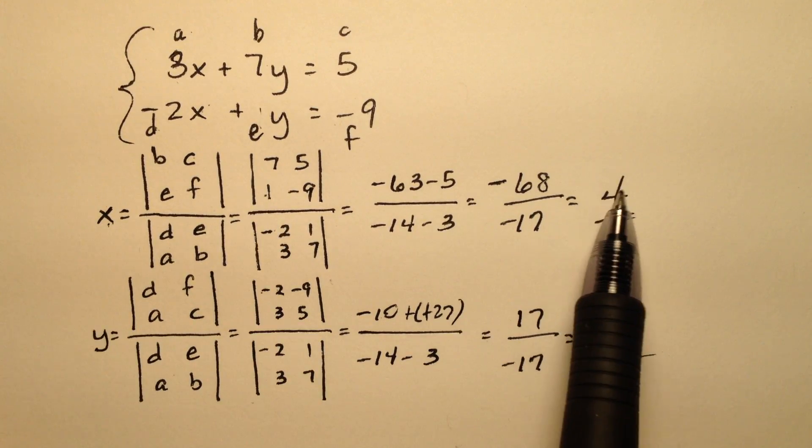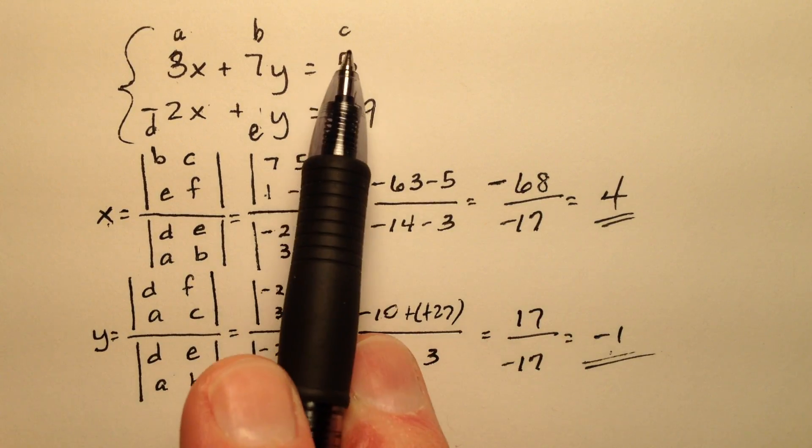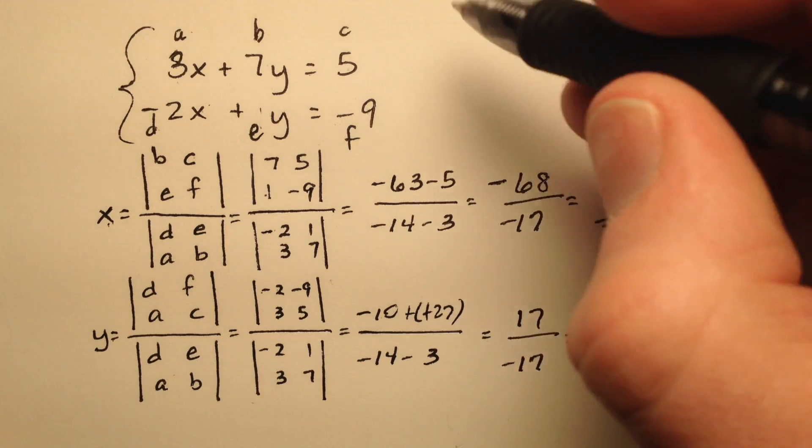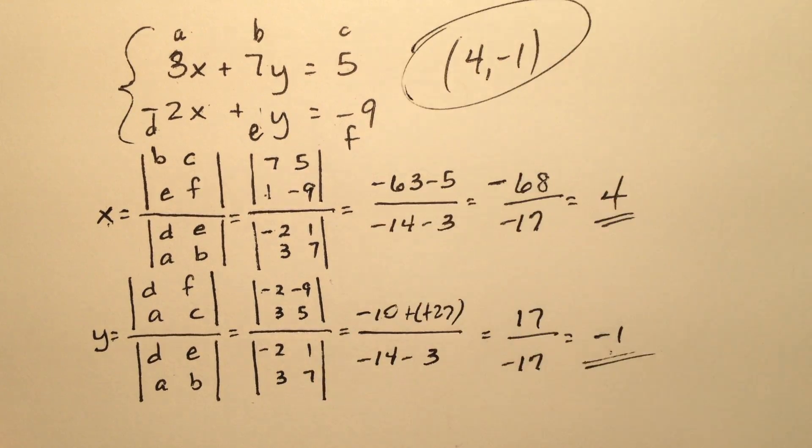So the solution for X is 4. The solution for Y is negative 1. So the solution to this system is the ordered pair 4, negative 1.